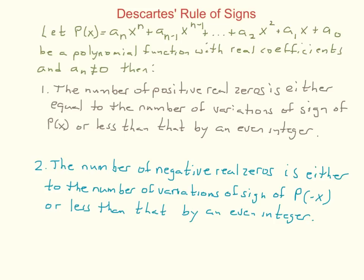For negative real zeros, the count equals the number of sign variations in p(-x), or less than that by an even integer. To find the number of negative real zeros, you first evaluate p(-x), simplify the result, then count the sign variations in that simplified expression.